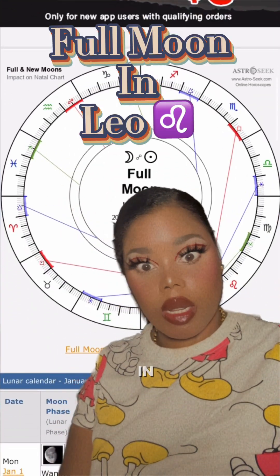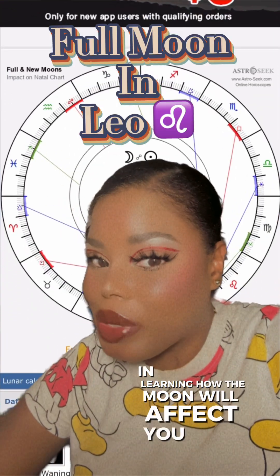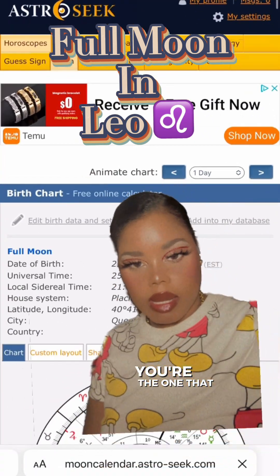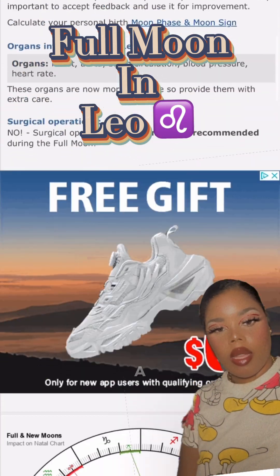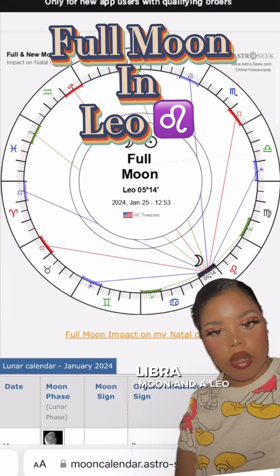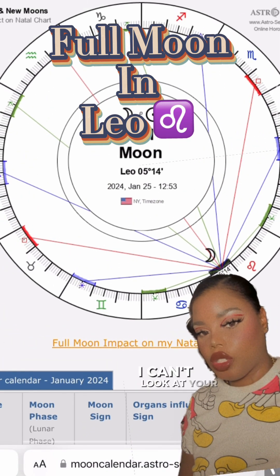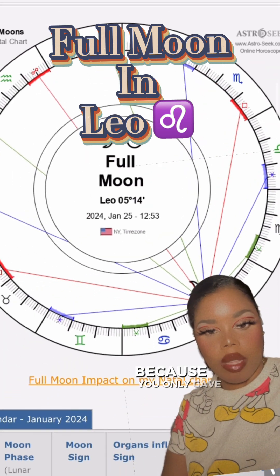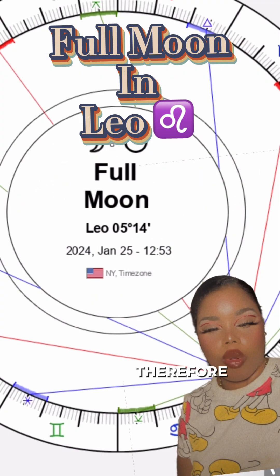If you're interested in learning how the moon will affect you, listen up. Double Lia Rose, you're the one that posed me this question - you have a Pisces sun, Libra moon, and a Leo rising, and how will that affect you? I can't look at your chart because you only gave me your big three, so I can only guesstimate how the chart will affect you.